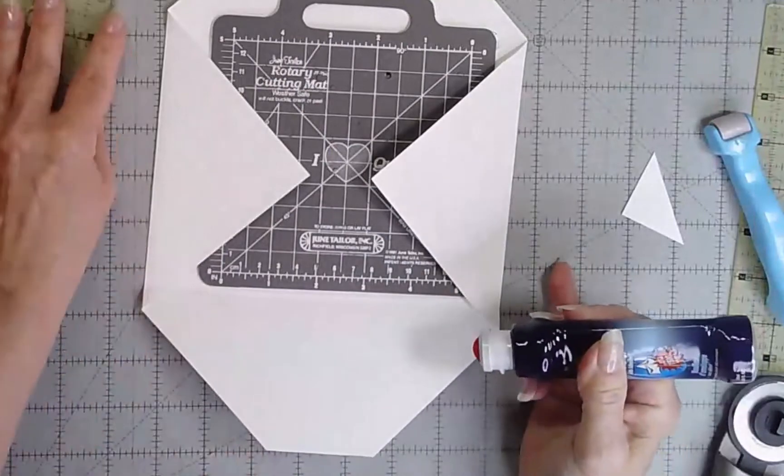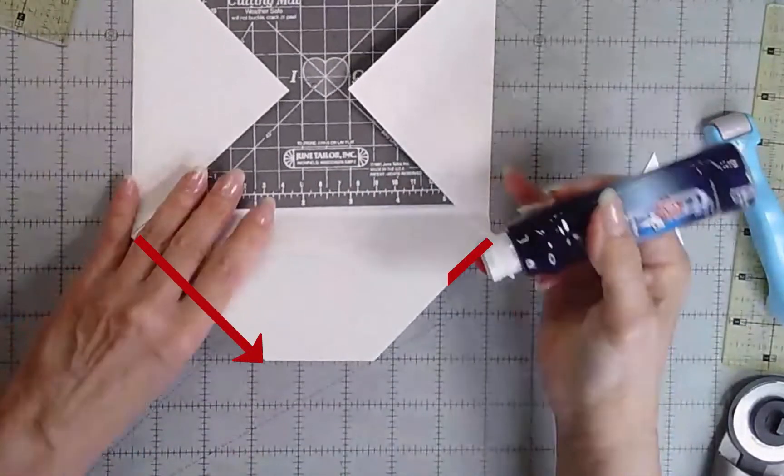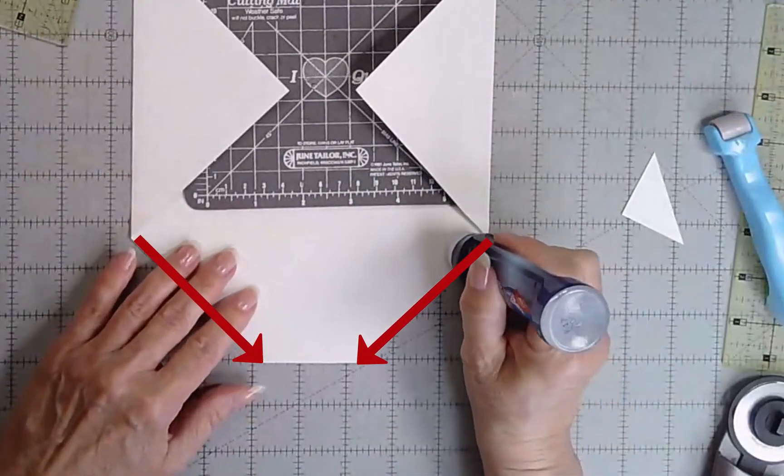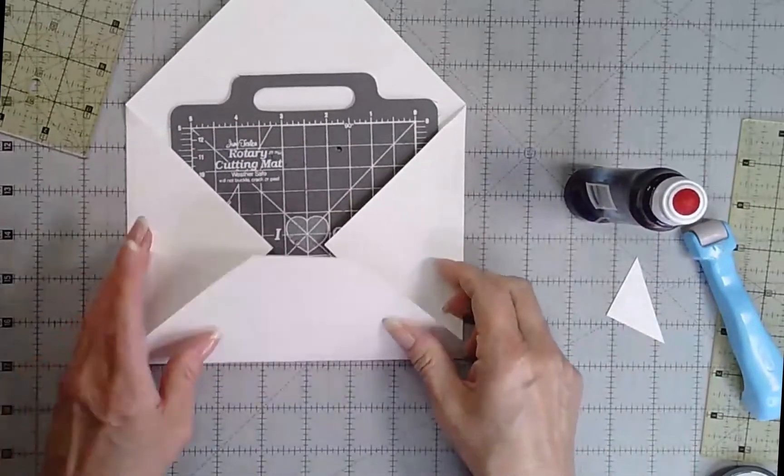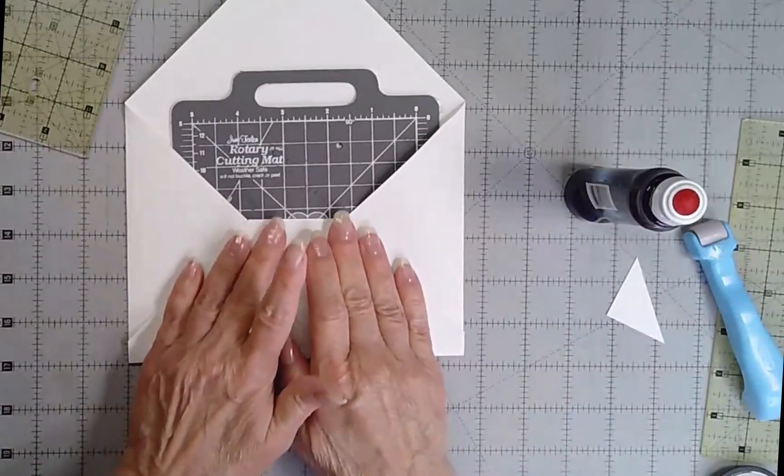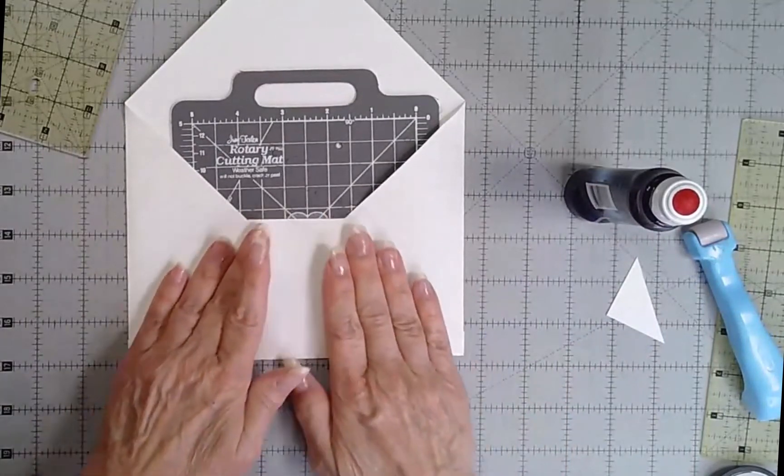Place your choice of adhesive along the left and right edge of the inside of the bottom large triangle. Fold the large triangle up and finger press to adhere to the envelope.